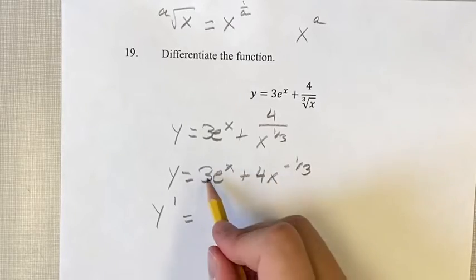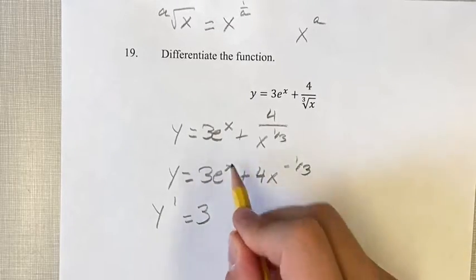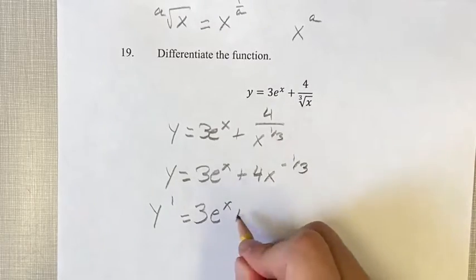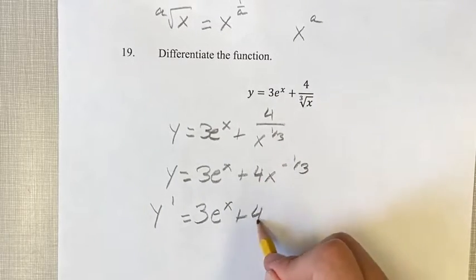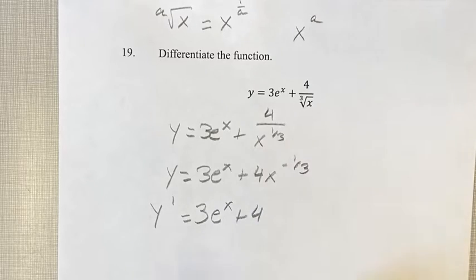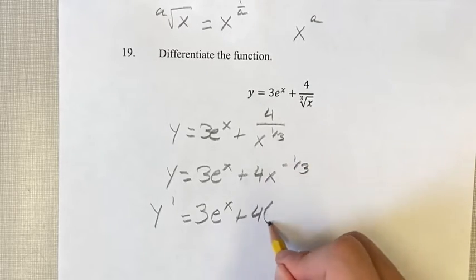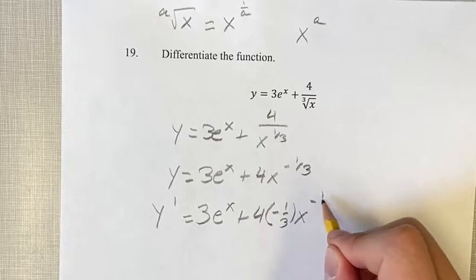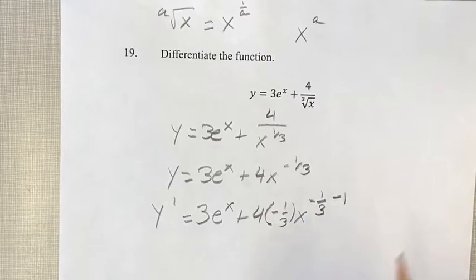So for this term, just keep the coefficient out front. Derivative of e^x is just e^x, so that's just going to stay the exact same. Plus, again, coefficient out front. We have a power function here, so we bring down the exponent into the coefficient, and our new exponent is going to be the old exponent minus 1.